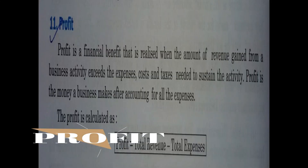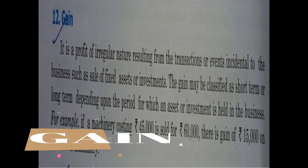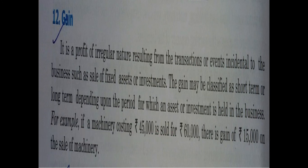Profit is a financial benefit. You earn profit when you subtract total expenses from total income or total revenue. Gain is a profit of an irregular nature — it is occasional profit. For example, if you sell a fixed asset in your business — which you don't do regularly — any benefit received from selling fixed assets or investments is called a gain. It may be classified as short-term or long-term gain. For example, if machinery worth 45,000 is sold for 60,000, there is a gain of 15,000.